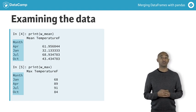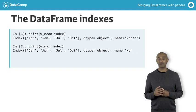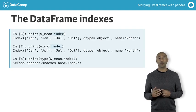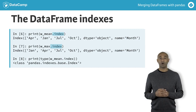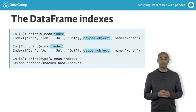The alphabetical ordering gives a distorted sense of time-dependent trends. The data frame indexes are accessed directly with the dot index attribute. Both W_mean and W_max have indexes of type object because the index labels are strings, as shown by the type function.